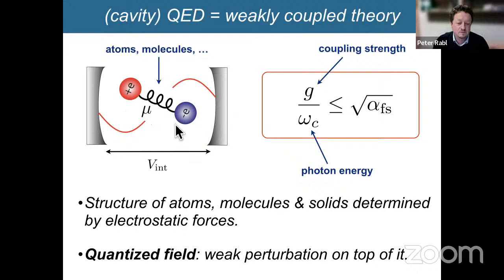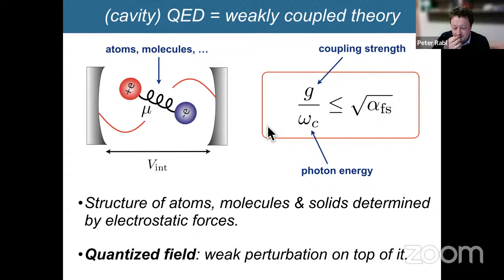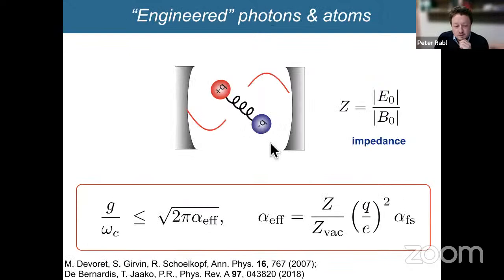Even making the cavity as small as possible increases the coupling quite a bit, but you never leave the regime where this interaction is just a small perturbation. We always have atoms or molecules coupled by electrostatic forces, with quantized field coupling always being a small perturbation. However, I made a crucial approximation in this derivation. Let me redo it with what I would call 'engineered photons' — suppose we have a way to produce electromagnetic excitations where we can change the ratio between electric and magnetic field components, which is the impedance of this mode.